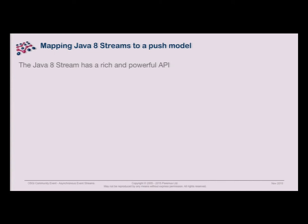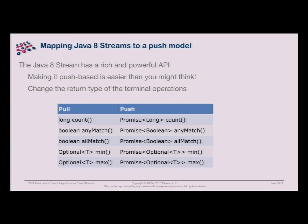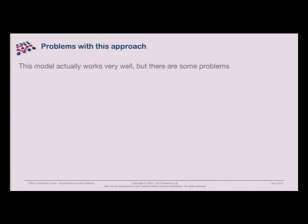We take our Java 8 stream that we like and change the return types so all terminal operations become promise-based. Previously we had 'long count' — now it's a Promise of Long. Booleans for anyMatch and allMatch, and min and max now return a Promise of Optional, which is less confusing than it sounds. But there are some problems — we're not quite at a solution you'd want to use.